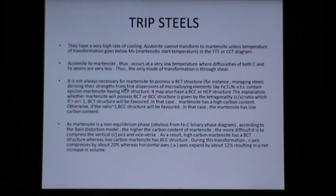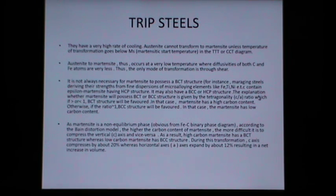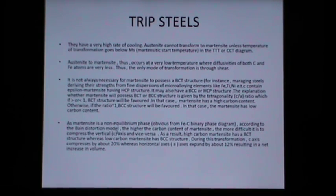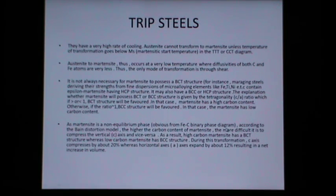It is not always necessary for martensite to have a body-centered tetragonal (BCT) structure. For instance, maraging steels derive their strength from fine dispersions of microalloying elements like iron, titanium, nickel, etc., and contain epsilon martensite with an HCP structure. Martensite may also have a BCC or HCP structure. The tetragonality ratio c/a determines the structure: if greater than one, BCT is favored with high carbon content; if nearly equal to one (e.g., 1.01–1.02), BCC is favored with low carbon content.